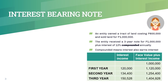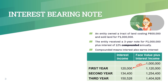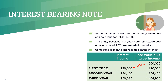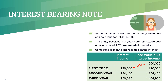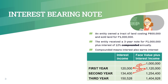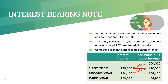The interest in the first year is computed as 1,000,000 pesos × 12%, which gives us 120,000 pesos. In the subsequent year, on top of the 1 million pesos, the 120,000 pesos interest will also earn interest. Hence, the interest income in the second year is computed as 1,120,000 pesos × 12%, which is equal to 134,400 pesos, and so on.